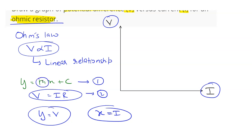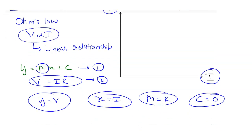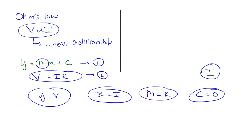The slope M is equal to the resistance R, and C, the intercept value, is equal to 0. This means that the line for the V-I graph will be passing through the origin because C equals 0.